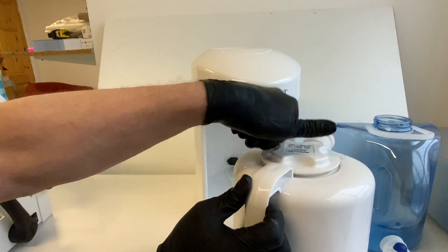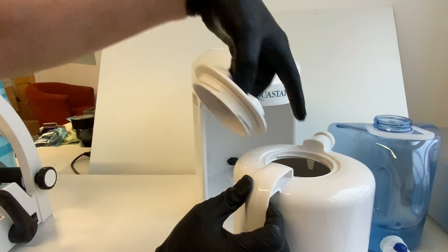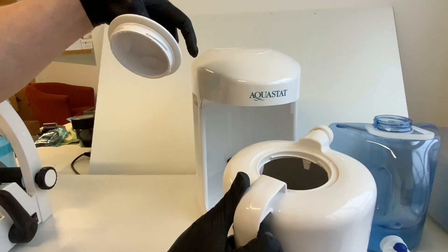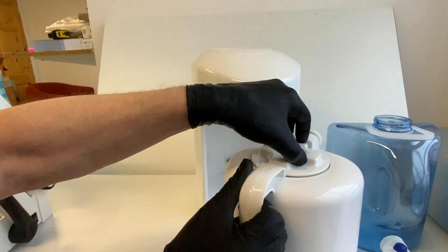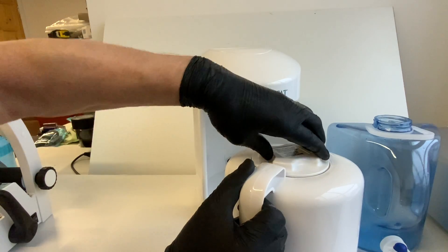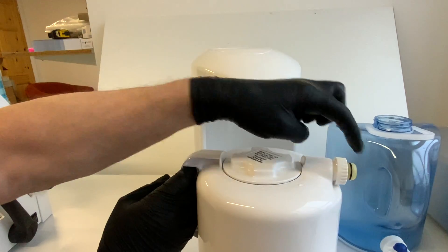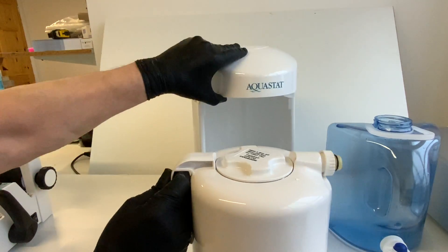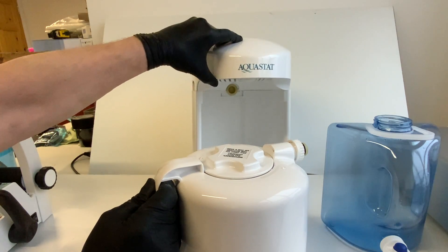This jug has a cap and you can fill the water in there up to the marker. Make sure you seal the lid tightly, and this piece here will fit into the back of the Aquastat.